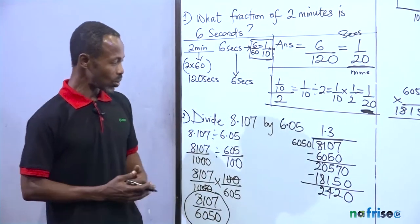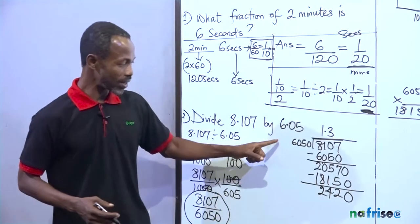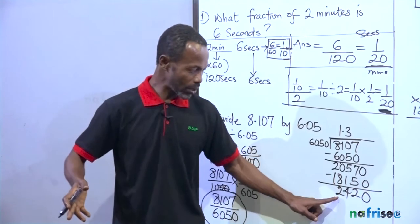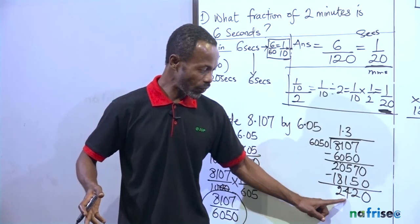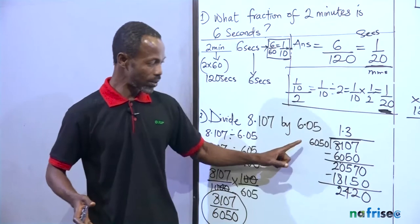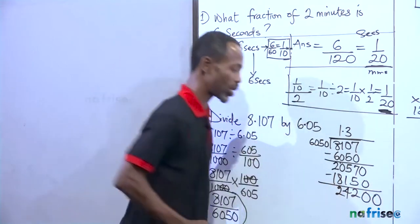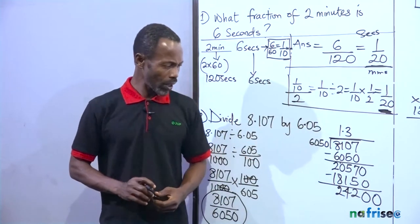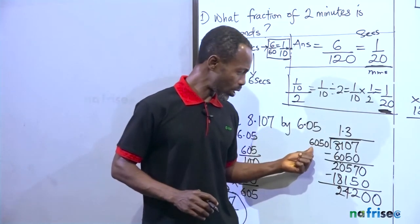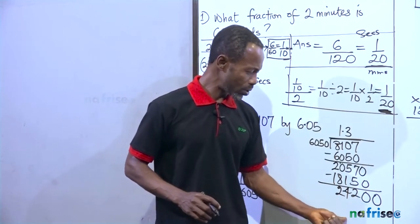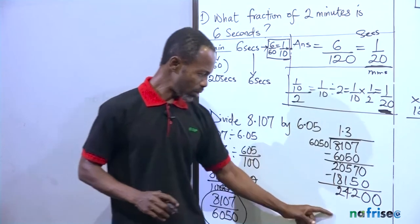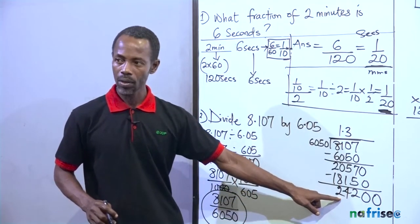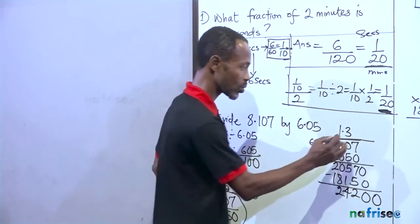How many times will I find 6 in 24? That's like about 4. Because this is about 2,420, it cannot divide 6,050. So I will add 0 here again. Because after decimal point, I'm allowed to add as many zeros as possible. So if I'm looking at 6,050 and I'm seeing 24,200, something tells me 4 is the nearest number. Because I see this as 6 and I see this as 24.